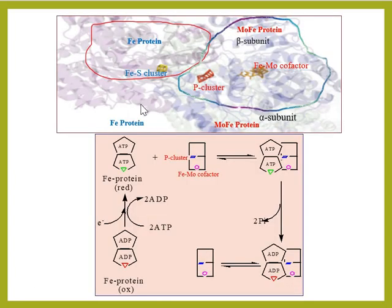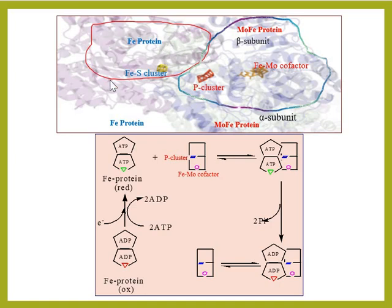With the help of this figure we can understand the mechanism of nitrogen fixation. This shows the electron transfer in the nitrogenase enzyme — the mechanism of electron transfer from ferredoxin to the FeMo cofactor. After the transfer of electrons from the Fe protein to the FeMo cofactor, the reduction of nitrogen takes place at the FeMo cofactor.